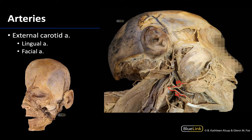The lingual artery supplies the majority of the floor of the mouth, which we'll talk about in more detail in the oral cavity session. The facial artery traverses the submandibular triangle, so it's considered a content of this triangle, and it emerges over the body of the mandible as you can see here. It's going to go over the masseter, travel with the facial vein, and ascend to supply the structures of the face. You can see the facial artery here starting to split off into some of its branches.